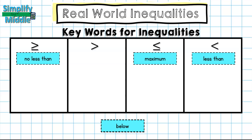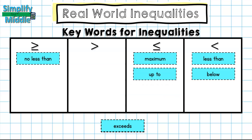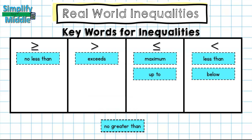Maximum means the most something can reach — it could be exactly that value or smaller. 'Below' is less than. 'Up to' is less than or equal to. 'Exceeds' is greater than — if you exceed a value, you're going to be more than that value.